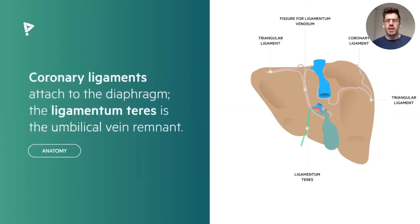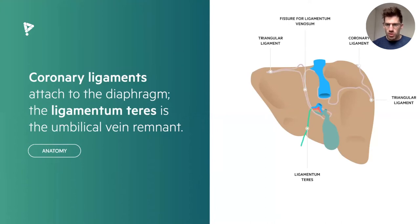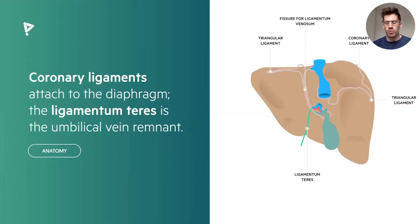There are lots of ligaments surrounding the liver that help hold it in place. We have coronary ligaments that attach to the diaphragm superiorly. We have the ligamentum teres, which is the umbilical vein remnant from when people are foetuses. We also have triangular ligaments which form the corners of the coronary ligament, and a fissure area from the previous ligamentum venosum, which shunts blood during the neonatal period.